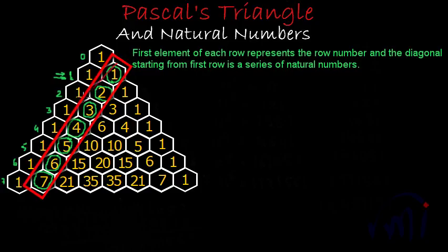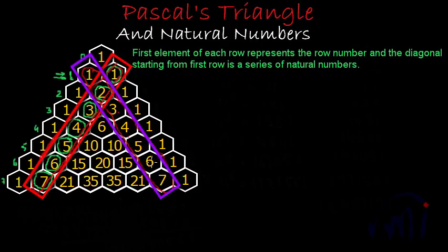This is one diagonal starting from the first row, and this is another diagonal starting from the first row. They both represent a series of natural numbers. If you see it properly, this is 1, 2, 3, 4, 5, 6, 7, and this is also 1, 2, 3, 4, 5, 6, 7.